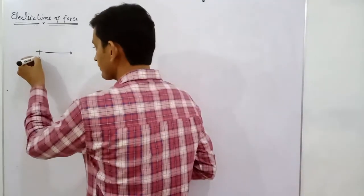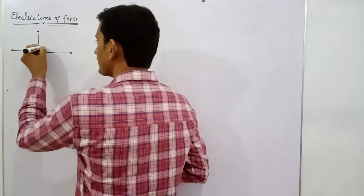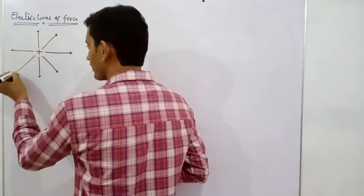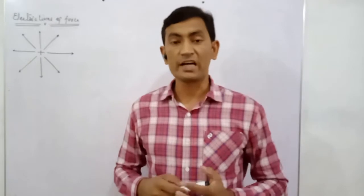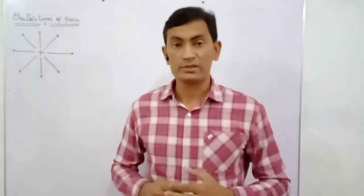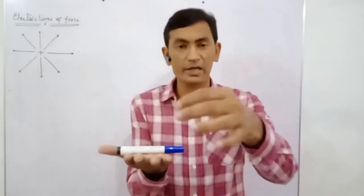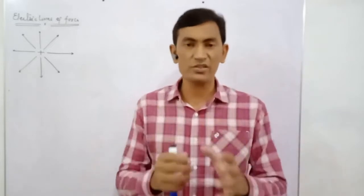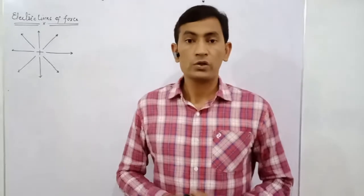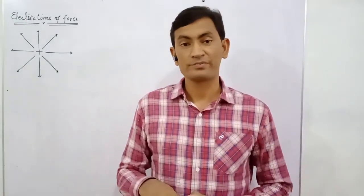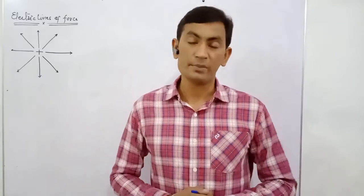Since we are using these lines of force, we place them to visualize the field. These lines will be virtual — these are the imaginary paths along which charges flow. A straight line itself is representing the direction of force, the direction of the field, and also the imaginary path.